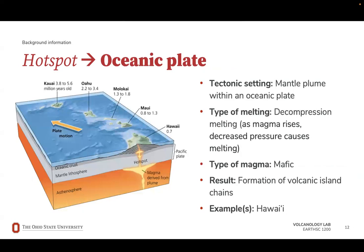A hotspot beneath an oceanic plate, however, will have mafic magma. This type of volcanism results in the formation of volcanic island chains. One of the most famous examples of hotspot volcanism in an oceanic plate is the Hawaiian Islands. Each island began as a volcano connected to the mantle plume. Eventually, enough lava cooled and built up that the island rose above sea level. As the plate moves, the existing volcano is cut off from its magma source and a new volcano forms above the hotspot.